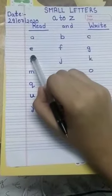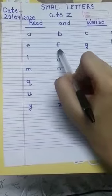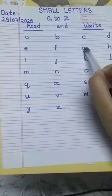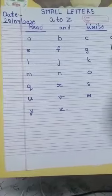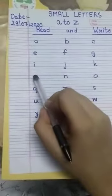E, E for elephant. F, F for fish. G, G for girl. H, H for hen.